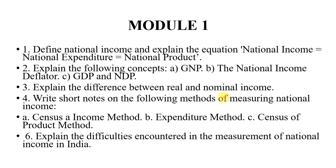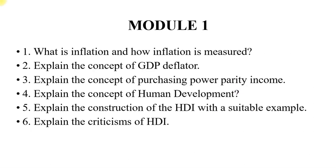There are a few more questions to cover in Module 1. Next is: What is inflation and how is inflation measured? Explain the concept of GDP deflator. Explain the concept of purchasing power parity income. Explain the concept of human development. Next, explain the construction of HDI with a suitable example, and lastly, explain the criticism or limitations of HDI. So these are around 10 important questions from Module 1.